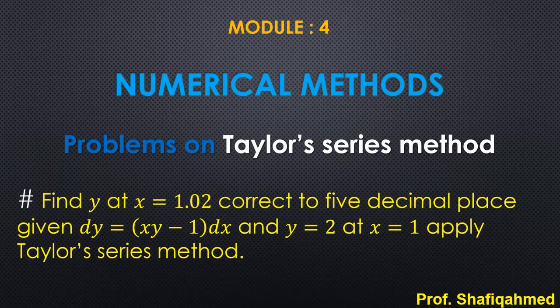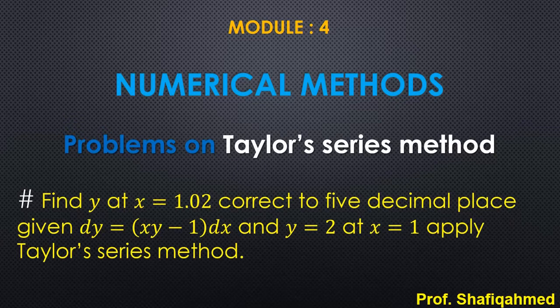Hello students. In today's lecture on numerical methods, we'll see problems on Taylor's series method. The problem is: find y at x = 1.02, correct to 5 decimal places, given that dy = (xy - 1)dx and y = 2 at x = 1. Apply Taylor's series method.